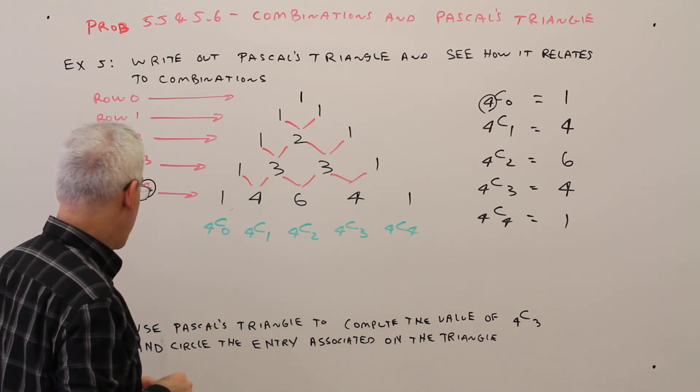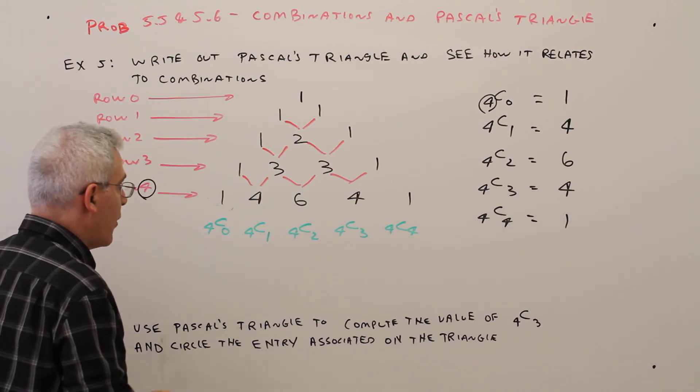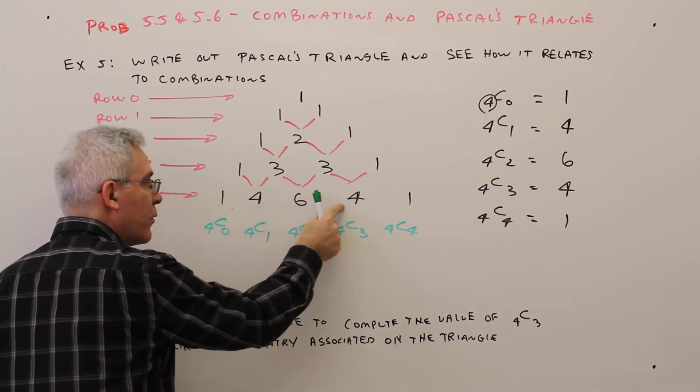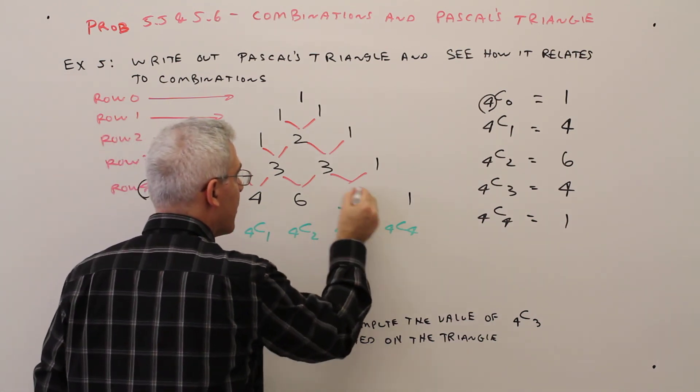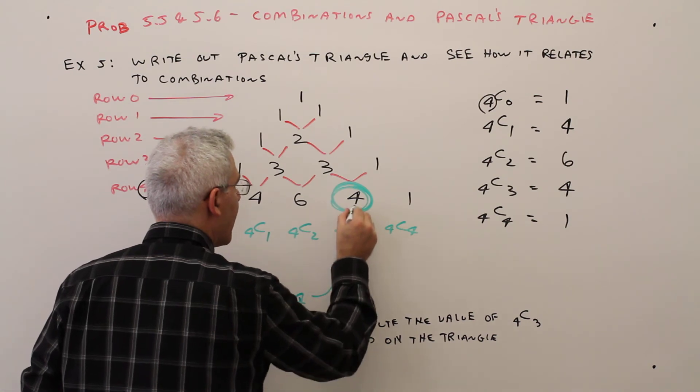Now it says use Pascal's triangle to compute the value of 4 choose 3. Well, 4 choose 0, 4 choose 1, 4 choose 2, 4 choose 3. So the value would be 4, and again, we've got it right there.